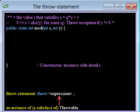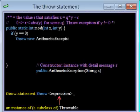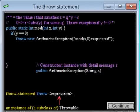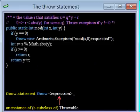We look at the specification for the constructor in class ArithmeticException, and we write a throw statement that throws an ArithmeticException with the desired detail message.